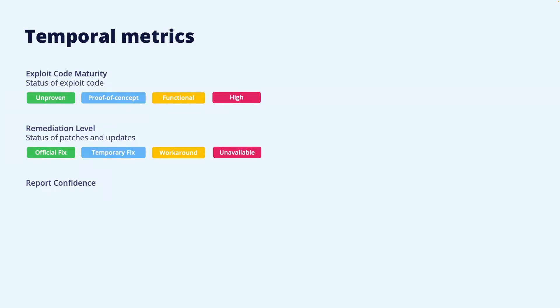The final temporal metric is report confidence, which defines the degree of confidence in the existence of the vulnerability and its technical description. The values are unknown, reasonable, and confirmed. Unknown means that there seems to be a vulnerability, but it is not clear why or where it exists — for example, a program could be made to crash affecting availability, but the exact cause is not yet known. As more details become known, the value can change to reasonable, and finally, when all details regarding the vulnerability and its root cause are known, the value is confirmed. A higher confidence in the report results in a higher severity.